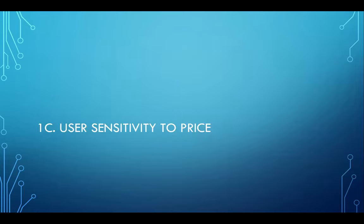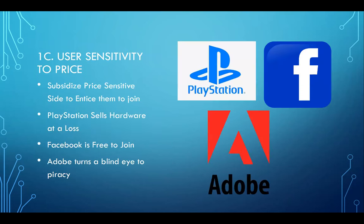The next factor is user sensitivity to price. Teenagers on allowances wouldn't spend a lot on expensive hardware upfront. PlayStation sells hardware at a loss; Facebook is free and doesn't even ask for credit card information. Making it easy to join the platform helps aggregate users. When the app experience is good, people want to join and their friends follow — that's how you build scale.